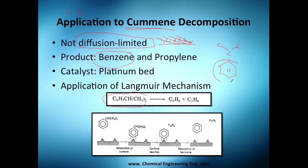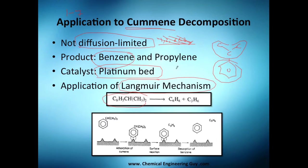We're going to be producing benzene and propylene. We're going to use a platinum catalyst bed and we're going to apply the Langmuir mechanism — why Langmuir? Because this is the case for this reaction. Even though you could use all the other models, this is the one that fits the experimental data.